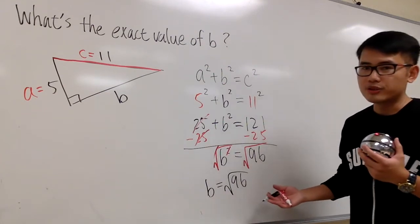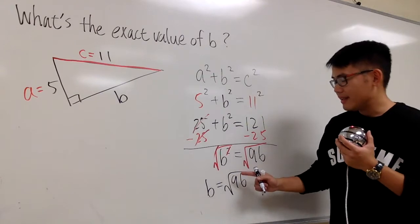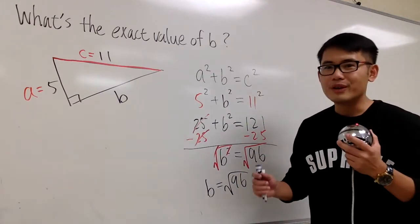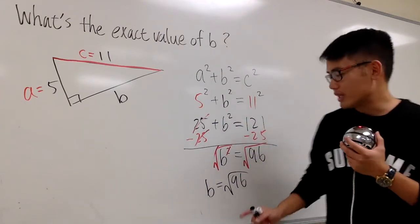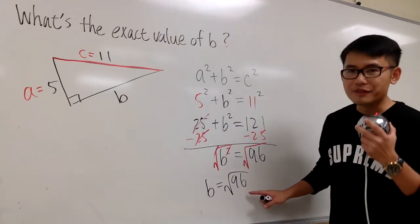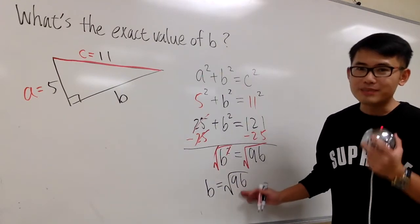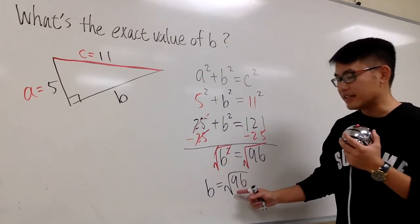But here's the usual question. Can we simplify √96? To do so, remember, we have to think about what times what will give us 96, and one of the numbers should be a perfect square. Well, I know 4 works, because 4 times 24 will give us 96, and 4 is a perfect square.